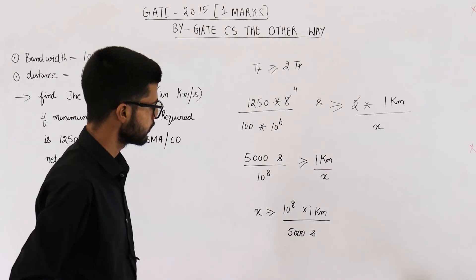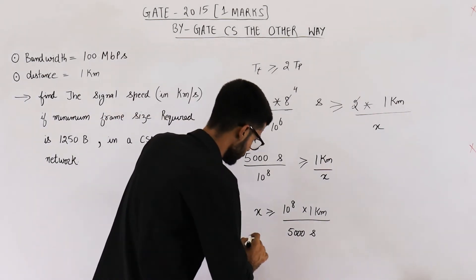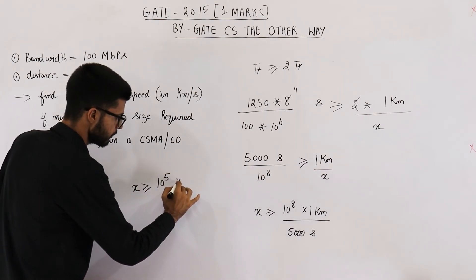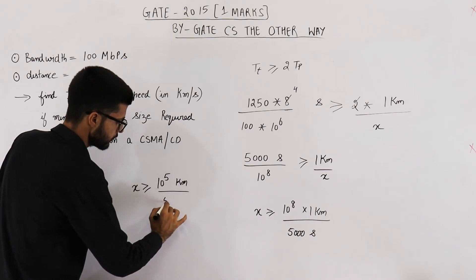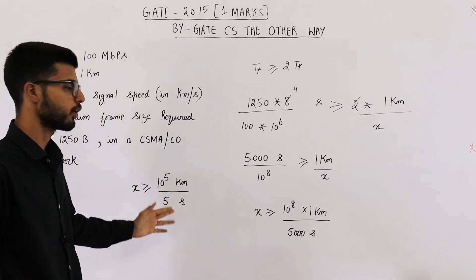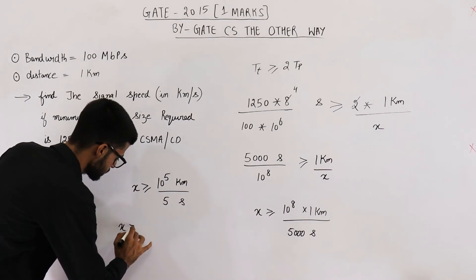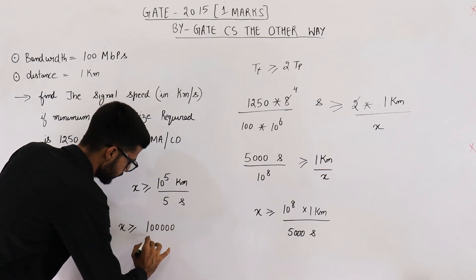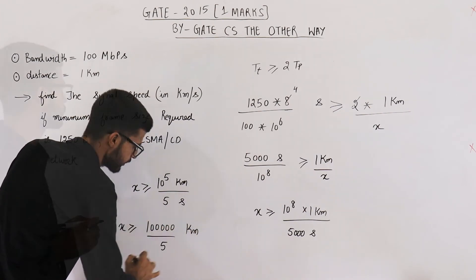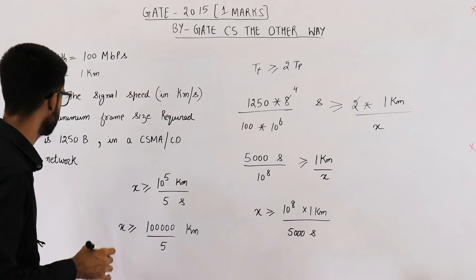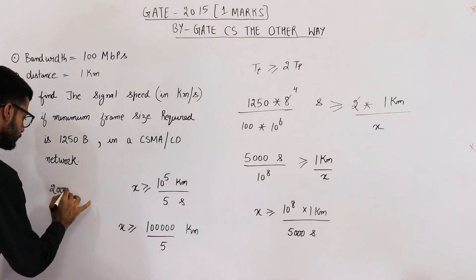So, X is greater than or equal to 10 raised to the power 5 kilometers by 5 seconds. This is 2 followed by 4 zeros. That means X is greater than or equal to 1 followed by 5 zeros divided by 5 kilometers per second. So, you can see the signal speed is 20,000 kilometers per second. Answer to this question is 20,000 kilometers per second.